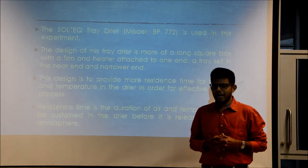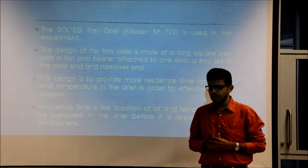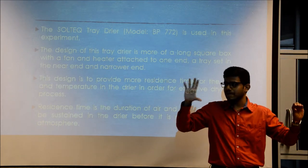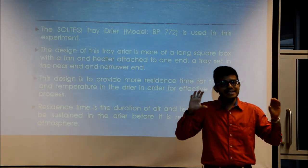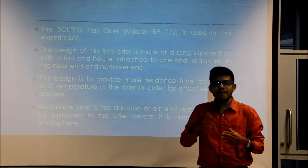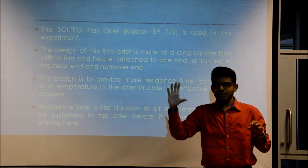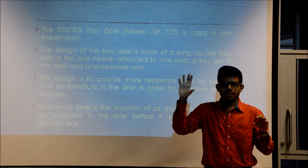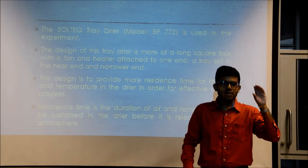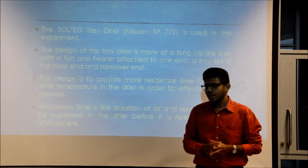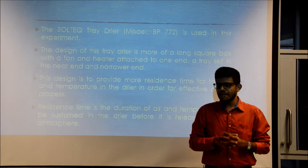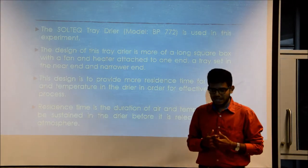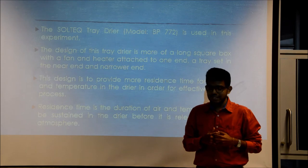The tray dryer used in this experiment is a Soltech tray dryer model BP-772. It is designed as a long square box with a narrow end and a bigger end. The bigger end allows placement of the fan and heater, while the narrow end is where the tray holding the sand is placed. This design provides more residence time for air and temperature in the dryer for an effective drying process. Residence time is the duration for air and temperature to be sustained in the dryer before being released to the atmosphere.